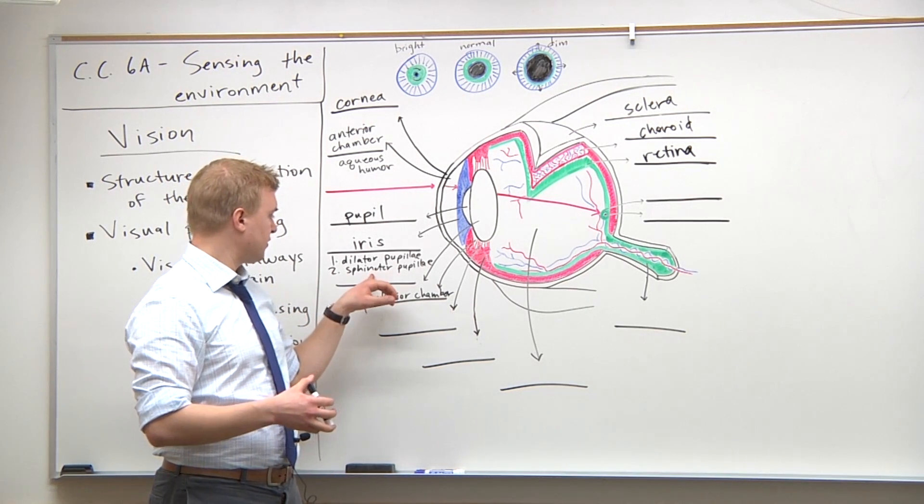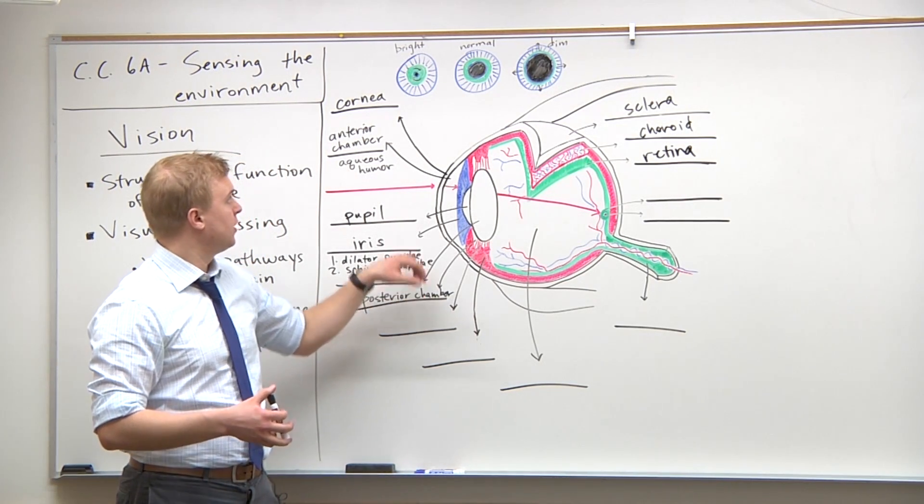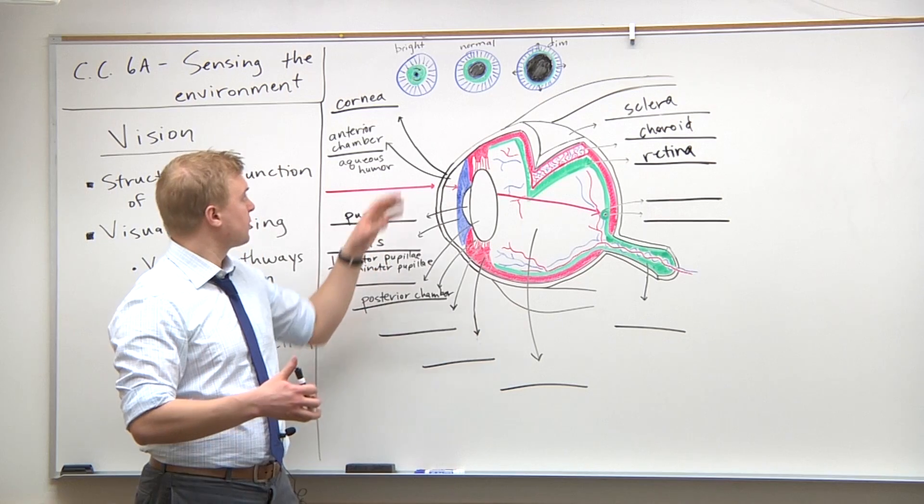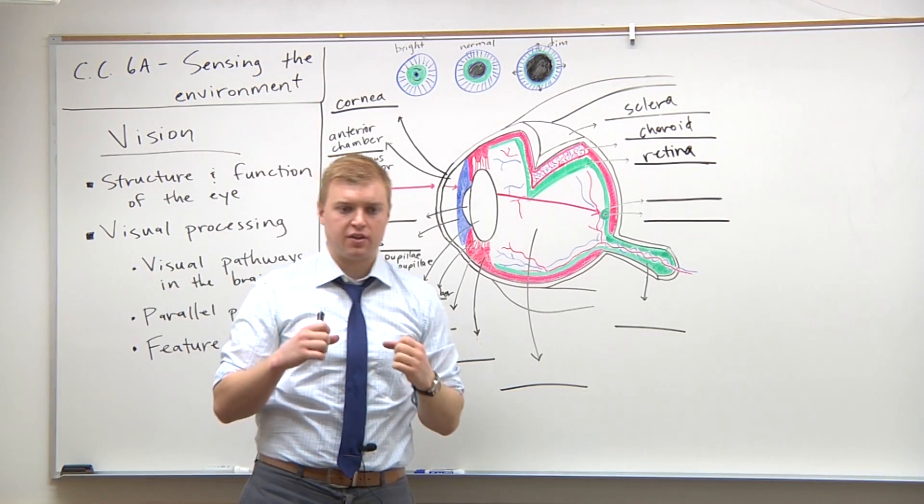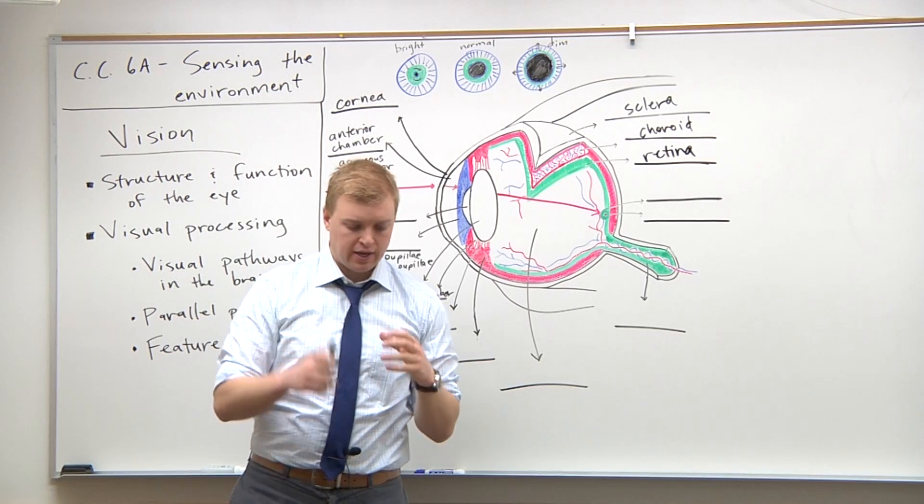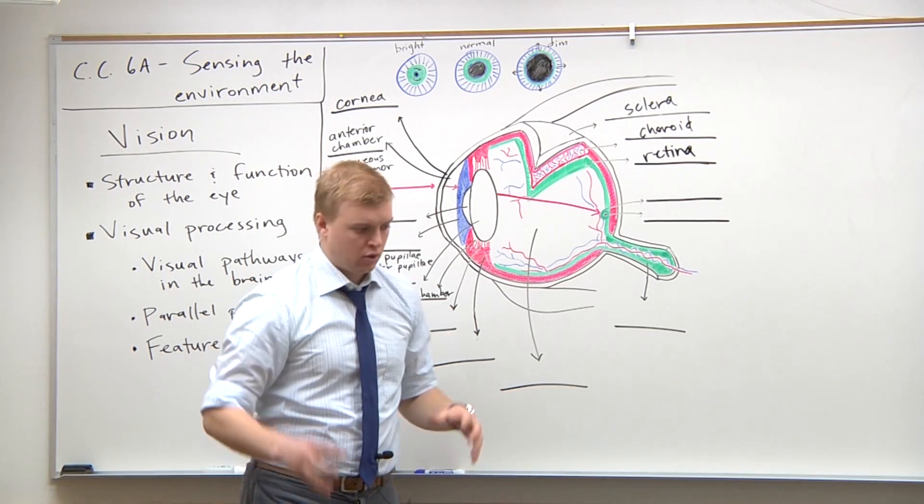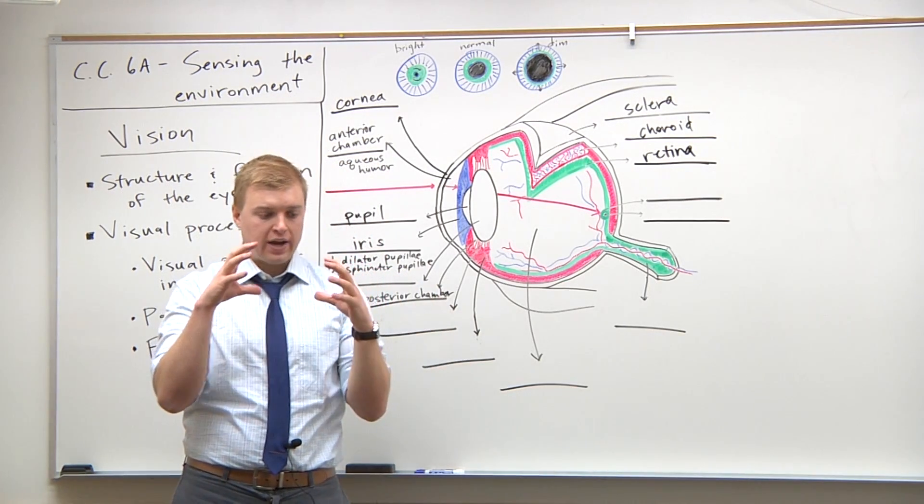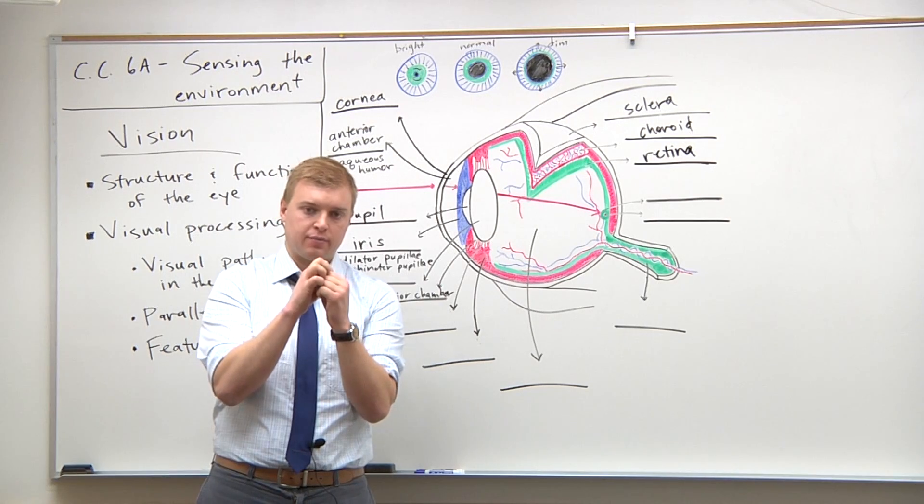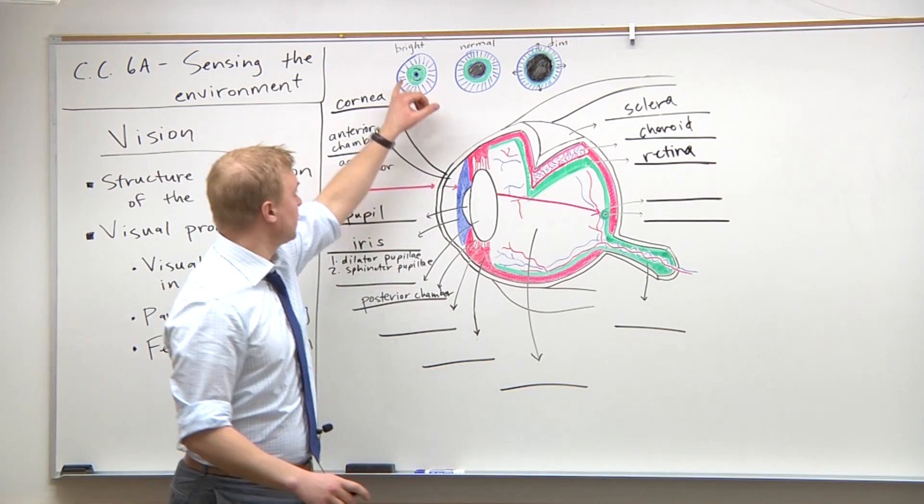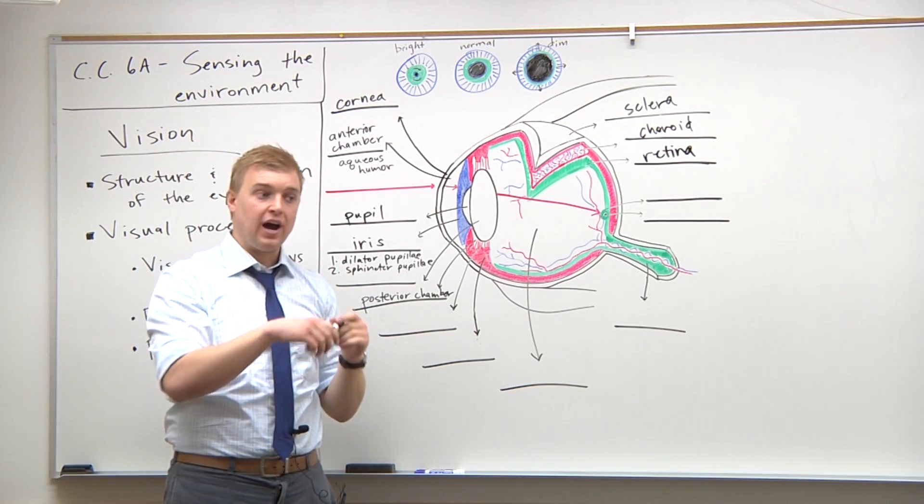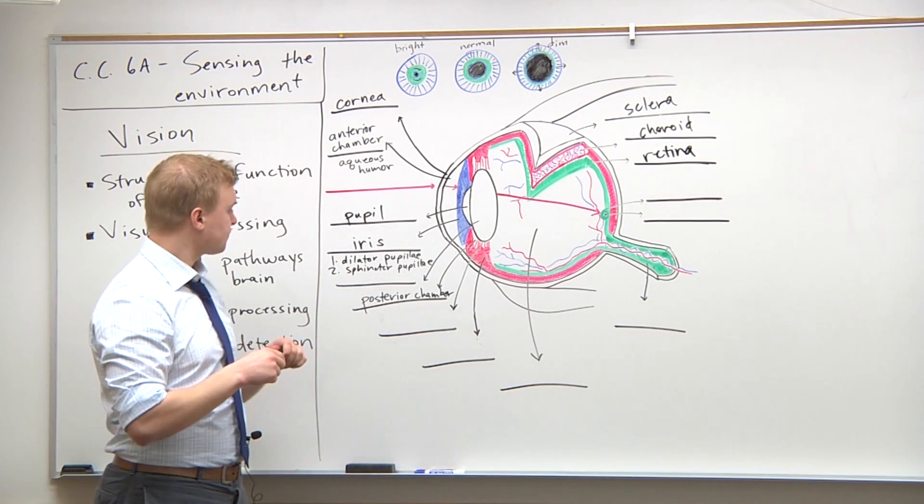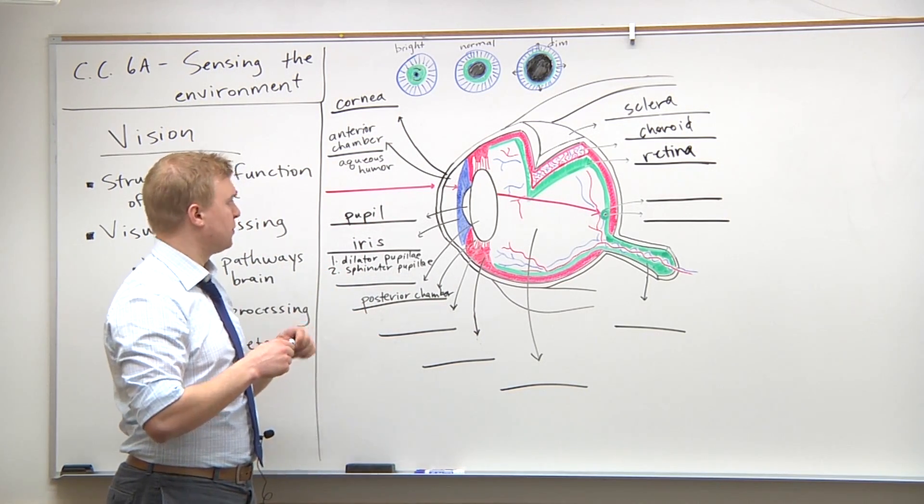The second muscle, the sphincter pupillae, is circular muscle. It functions like the sphincters in your GI tract - when it contracts, it constricts. When it contracts, it constricts the pupil and thus restricts the amount of light that enters the eye.